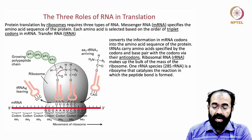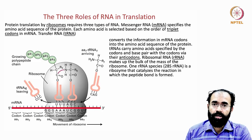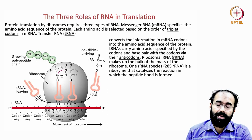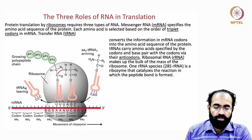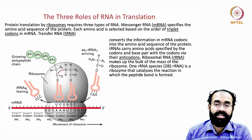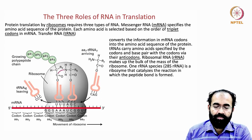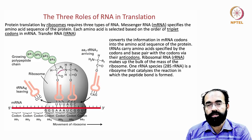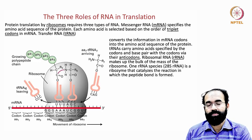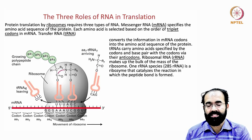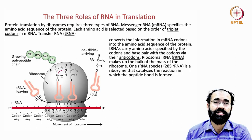The third type is ribosomal RNA, or rRNA, which constitutes the bulk of the ribosome. Although the ribosome is an RNA-plus-protein complex, the ribosomal RNA does much of the catalytic work. The 28S ribosomal RNA is a ribozyme that catalyzes the reaction in which the peptide bond is formed — the bond between two amino acids. Amino acids A, B, C are joined together with peptide bonds between each consecutive pair.